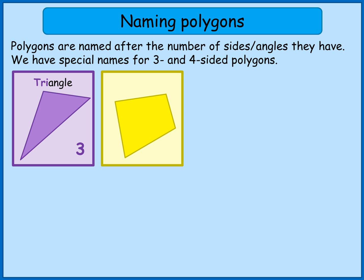The next one — we've got four sides there and that's called a quadrilateral. The word 'quad' is used quite frequently in English to mean four, so a quad bike is a bike with four wheels.